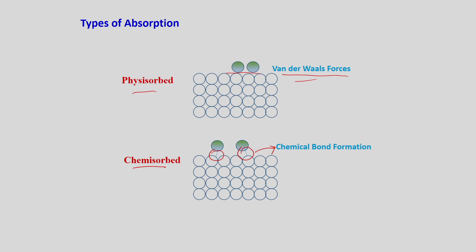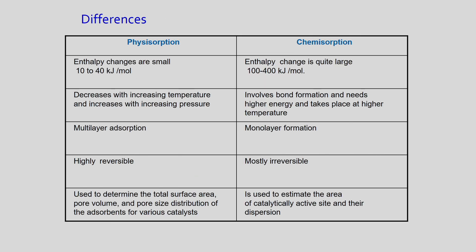Overall, in physisorption molecules are not bonded — it is driven by van der Waals forces. In chemisorption, you have chemical bond formation. This is adsorption, not absorption. These are the two different types of adsorption. Let us see the differences between physisorption and chemisorption.